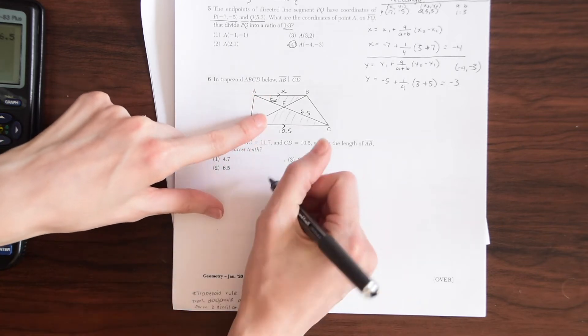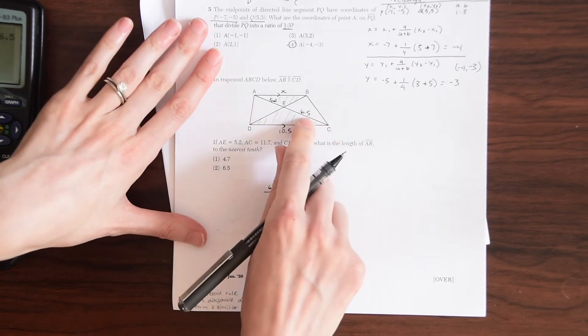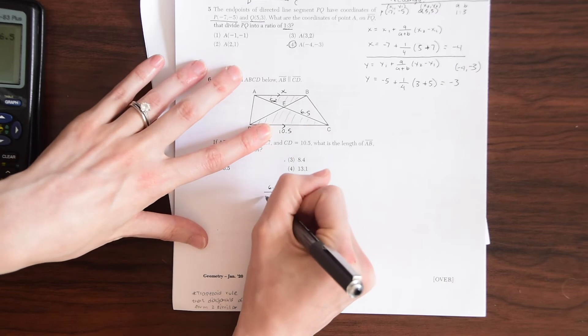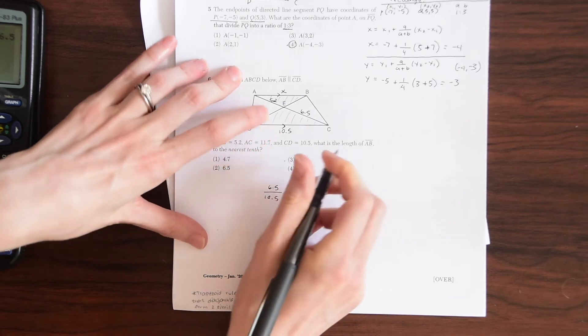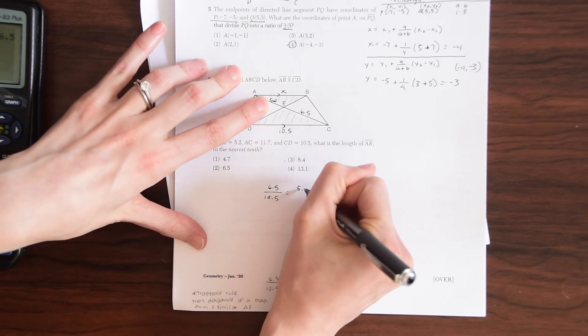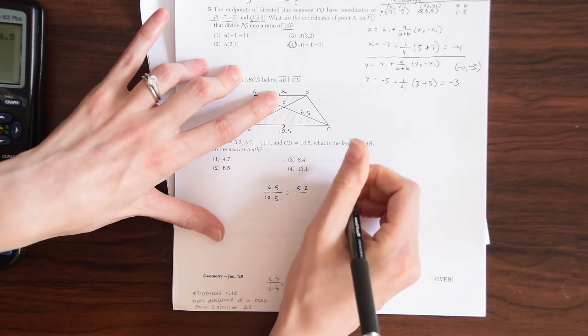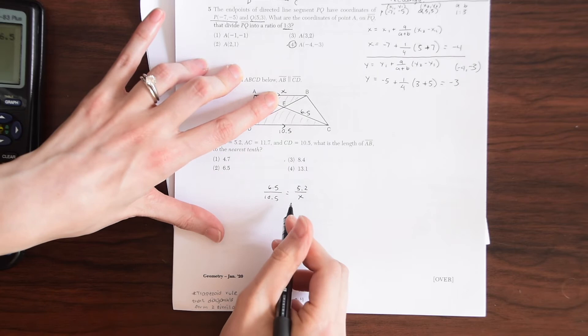So if we take 6.5 right here and compare it to its other length, 10.5, the base, we can say it is in proportion to 5.2, this length over here, AE, over this base, which we don't know, which is what we're trying to find.